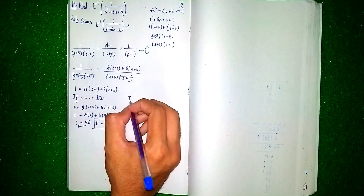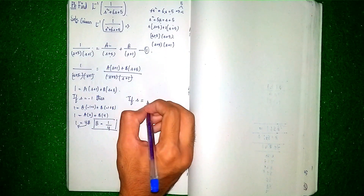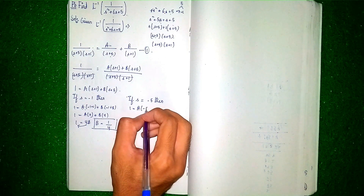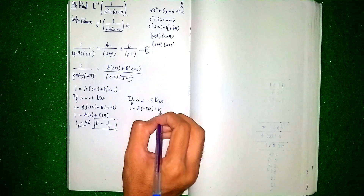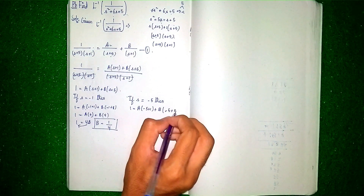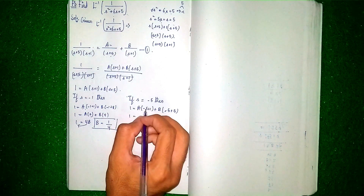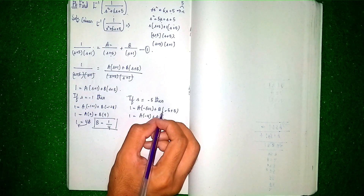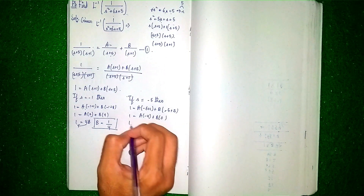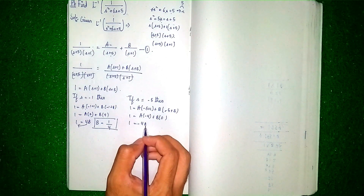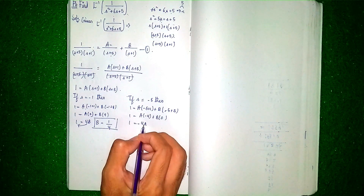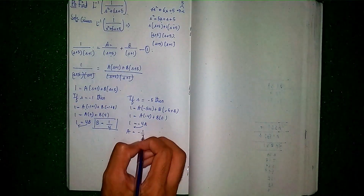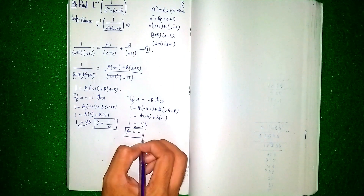To find A, let s = −5. Then 1 = A(−5 + 1) + B(−5 + 5), which gives 1 = A(−4) + B(0). So 1 = −4A, and therefore A = −1/4.